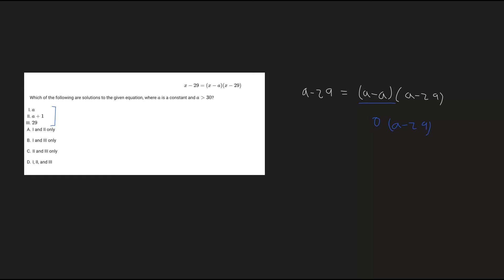We know zero is not equivalent to the left side of a minus 29. Therefore, we can rule out number one as an answer choice, and so anything in our answers with the rule one in them is going to be incorrect.